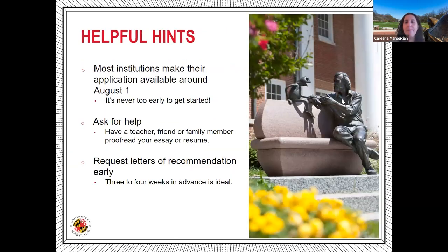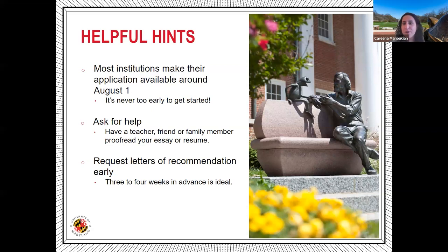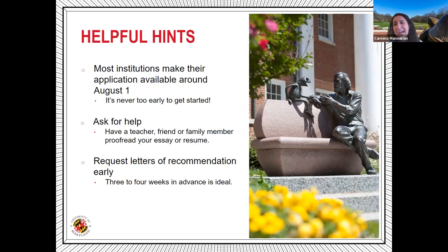Most institutions already have their applications available — they typically become available around August 1st. So it's never too early to get started, even now in September. Early action deadlines are usually sometime in November or December. Ask for help: have a teacher, friend, or family member proofread your essay, your resume, and your college application. Also, request letters of recommendation early — give your teachers and counselors about three to four weeks notice in advance, and follow up with them to make sure everything is submitted.